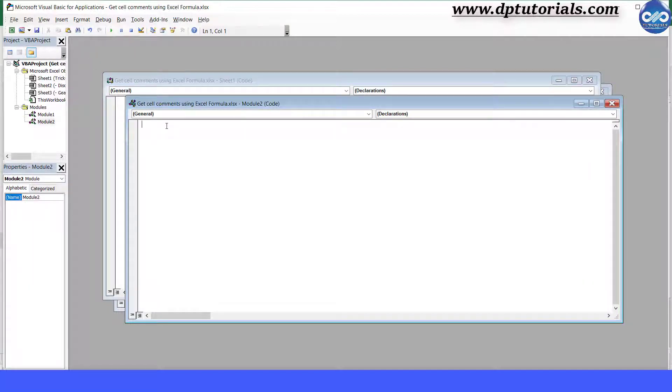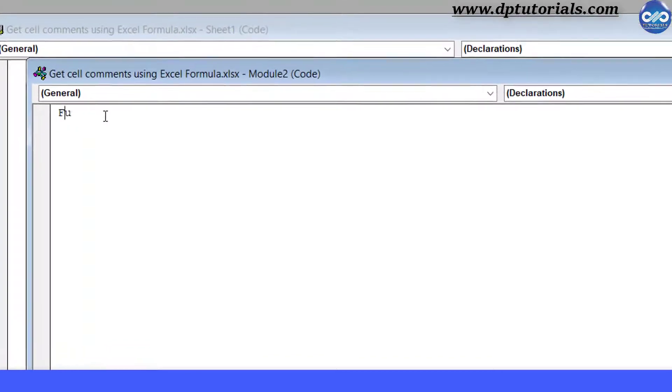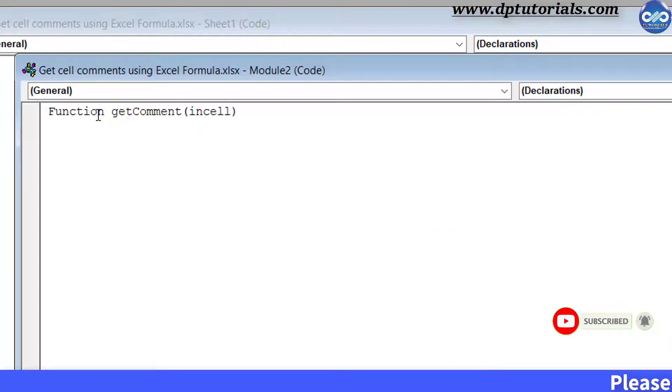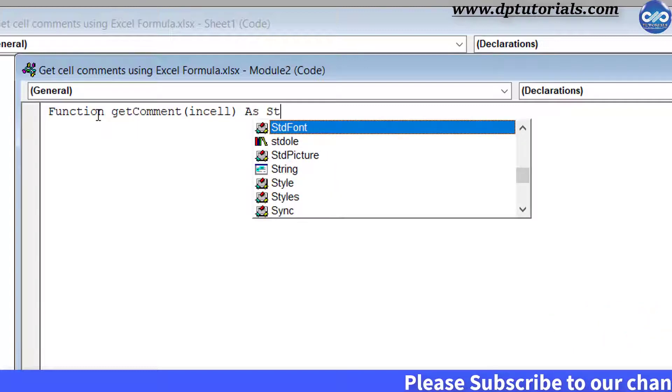Now type the code like this: function space getComment open the bracket inCell close the bracket space as space string. Press enter. On space error space resume space next and press enter again.